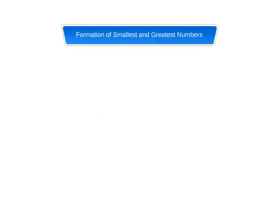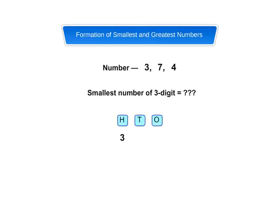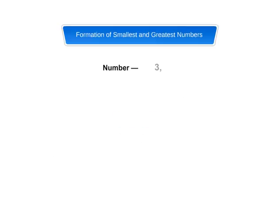Formation of smallest and greatest numbers. Suppose we are given three digits: 3, 7, and 4, and we want to form the smallest three-digit number using all the given digits without repetition. First, we select the smallest digit and write it in the hundreds place. Then, we write the next greater digit in the tens place, and lastly, the greatest digit in the ones place. So, the smallest three-digit number having 3, 7, and 4 is 347.